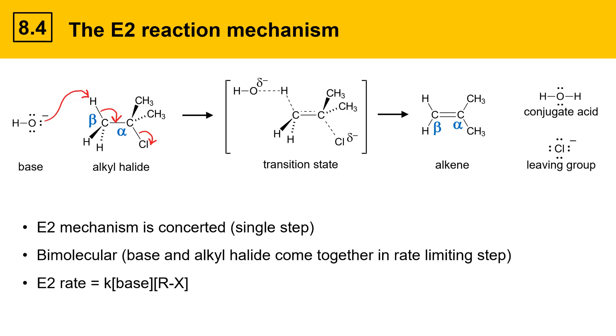The rate law is expressed by the equation K, which is the rate constant, times the concentration of base times the concentration of alkyl halide. So rate depends on both the concentration of the base and the alkyl halide. If you were to double the concentration of base, you would double the E2 rate. If you were to double the concentration of alkyl halide, you would double the E2 reaction rate. If you were to cut the concentration of base in half, you would cut the rate in half, and so on.